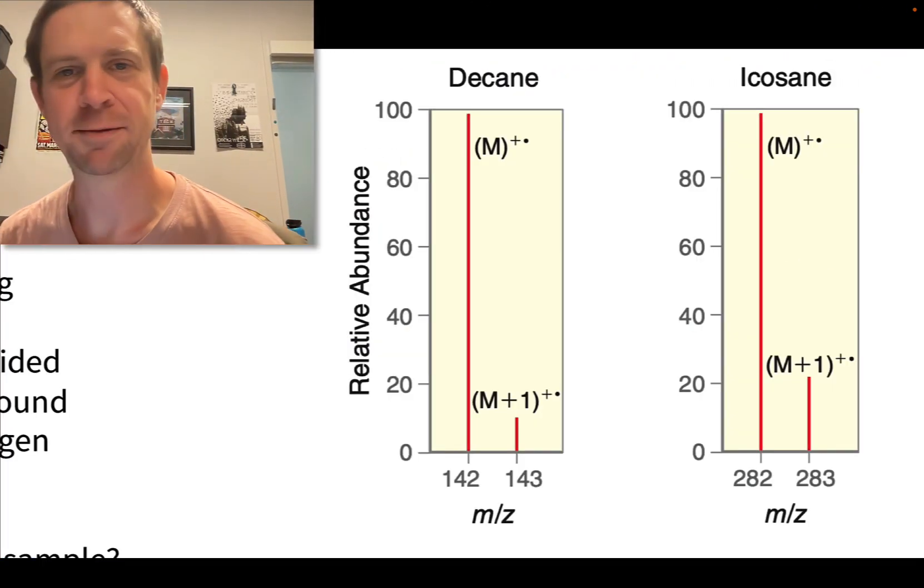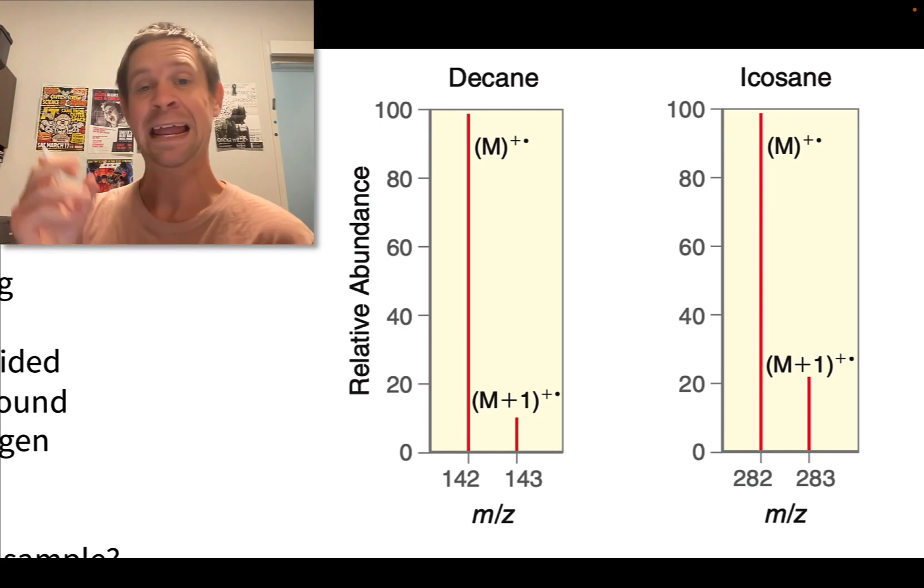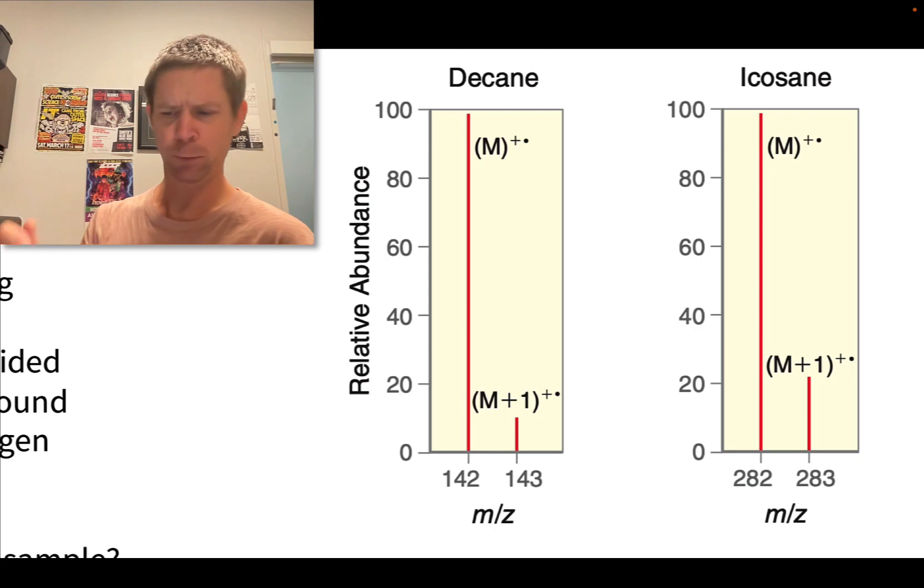One thing you'll notice in many mass spectra is that there's a tiny but definitely perceptible M+1 peak, one unit to the right of the molecular ion peak. What's going on with this? Well, one way we could interpret it is it involves the addition of a hydrogen atom to the molecular ion.